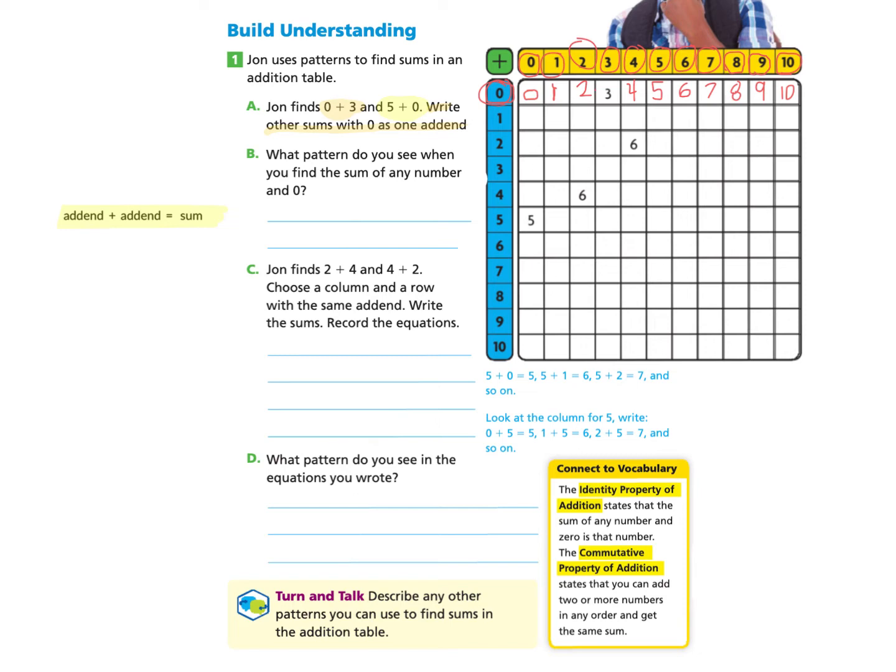Now we will complete the chart by saying 1 plus 0 makes 1, and 2 plus 0 makes 2, and continue on. So if you would like to pause and complete this on your own, you may do that. I'm going to keep filling in. 6 plus 0 is 6. 7 plus 0 is 7. 8 plus 0 is 8. 9 plus 0 is 9. And 10 plus 0 is 10. So we have completed the other sums with 0.